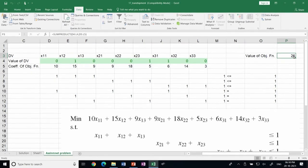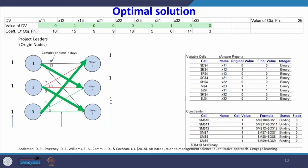The solution shows: project leader 1 is assigned to client 2, taking 15 days; leader 2 is assigned to client 3 (x23 = 1), taking 5 days; leader 3 is assigned to client 1 (x31 = 1), taking 6 days. So 6 + 5 = 11, plus 15 = 26. The total time to complete all clients' projects is 26 days.